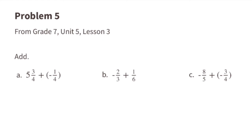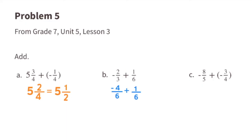Problem number five. Part a: 5 and 3/4 plus a negative 1/4. That's the same as taking away 1/4 from 5 and 3/4, giving 5 and 2/4, which equals 5 and 1/2. Part b: negative 2/3 plus 1/6. Get a common denominator: negative 2/3 equals negative 4/6. Negative 4/6 plus 1/6 equals negative 3/6, which equals negative 1/2.